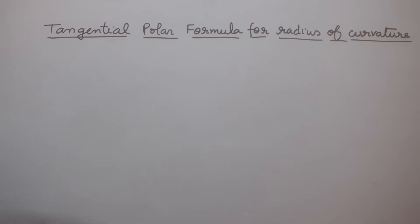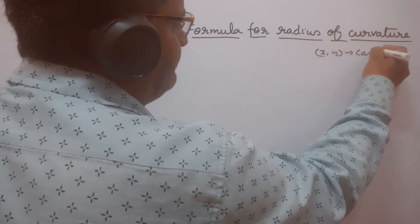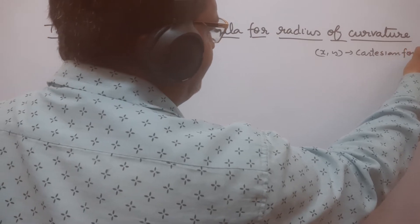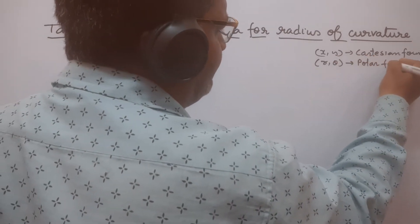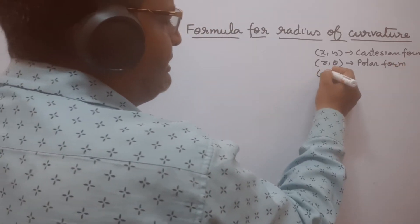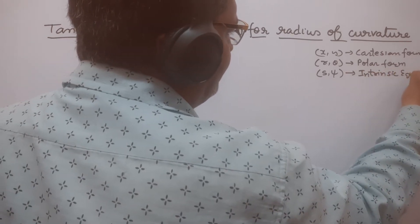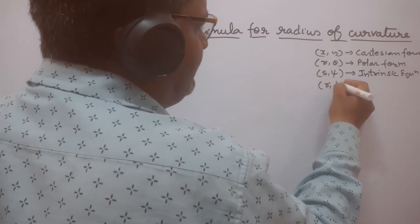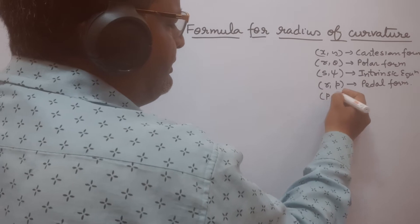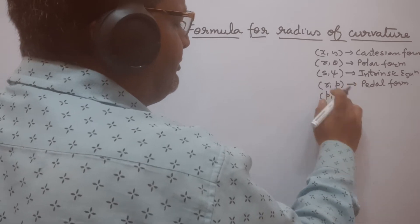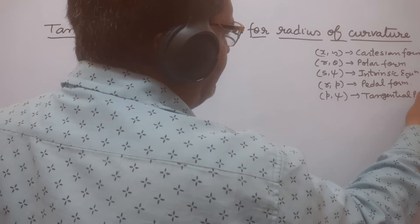First, we know that if any equation is in terms of x and y, this is called Cartesian form. If any equation represents R and Theta, this is called Polar form. If any equation represents S and Psi, this is called Intrinsic Equation. If any equation represents R and P, this is called Pedal form. And if any equation can be written in P and Psi, this is called Tangential Polar form.